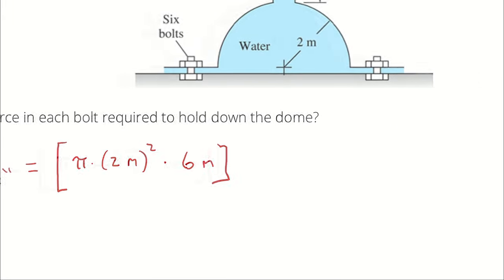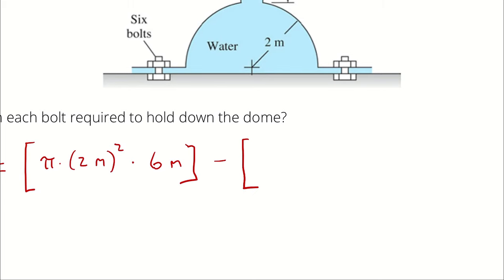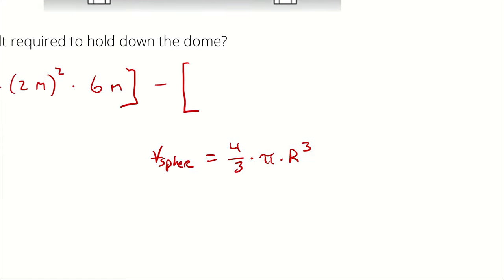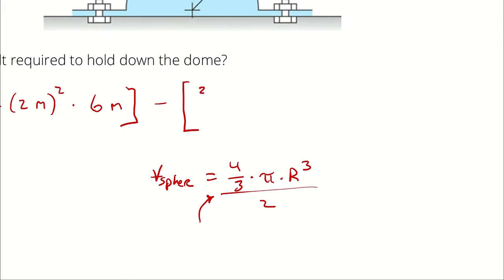Then I'm going to subtract the volume of a hemisphere. I know the volume of a full sphere is four-thirds pi r cubed, therefore half a sphere would be half of this. So two-thirds times pi times the radius, which is two meters cubed.